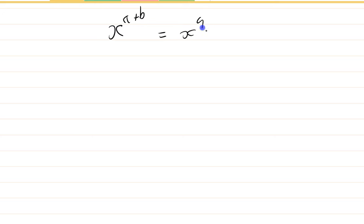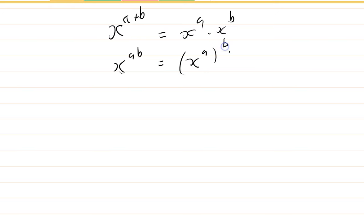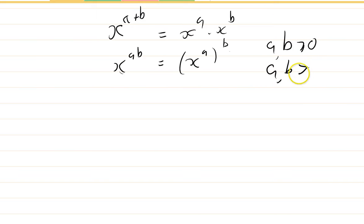I'm going to go back to talking about powers now. We've got two rules: x to the power a plus b equals x to the a times x to the b, and also x to the power a·b equals x to the power a, all to the power b. We've established that these make sense for a and b greater than or equal to zero.